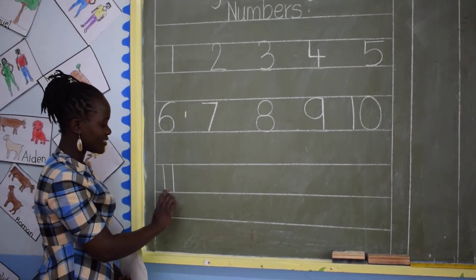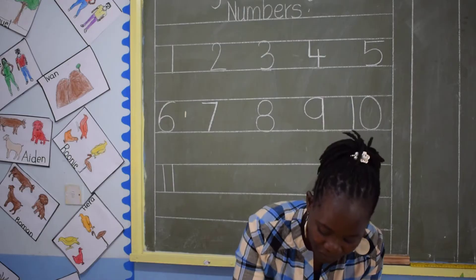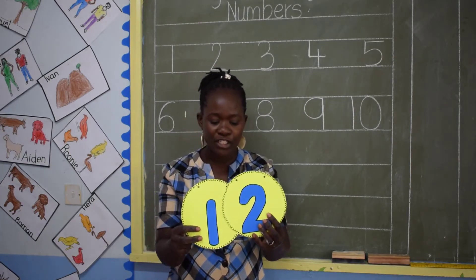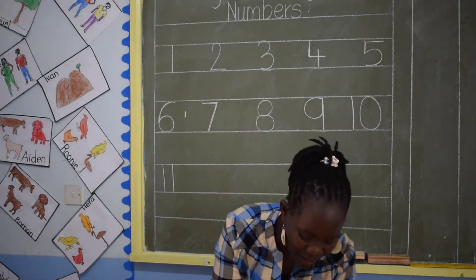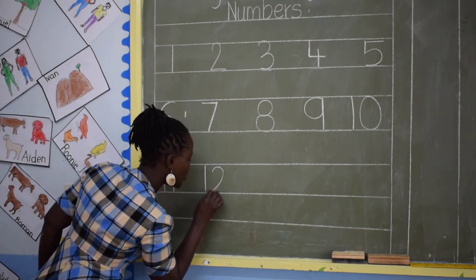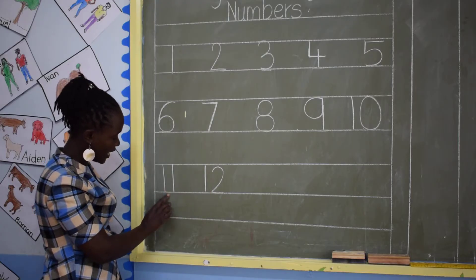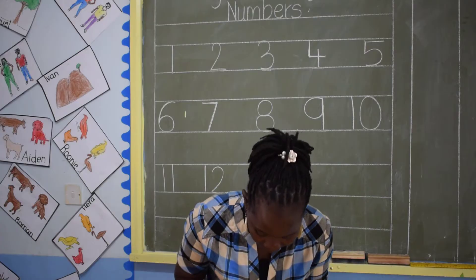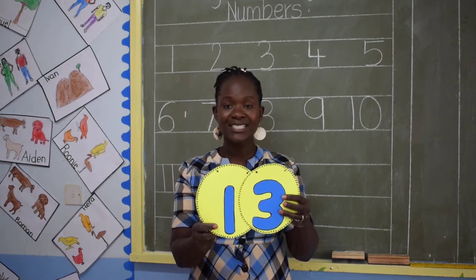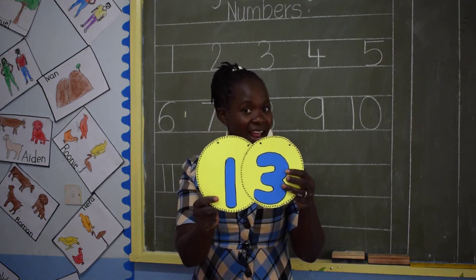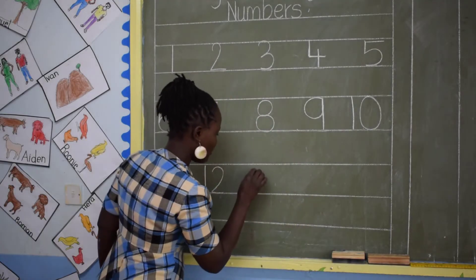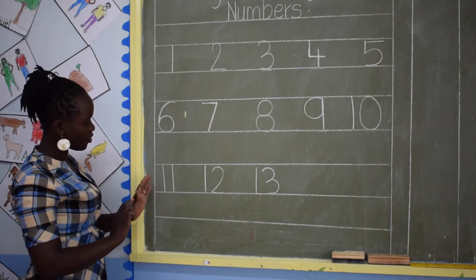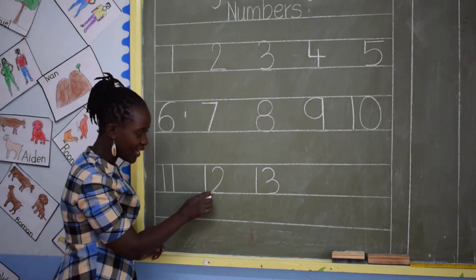Then we go to 12. The next number is number 12. And how do we write number 12? You write 1 and 2. This is number 12. This is 11, 12, 13. Number 13: we have 1 and 3. This makes 13. Let's write number 13 — number 13 is 1 and 3. Can we count again from number 11? 11, 12, 13.